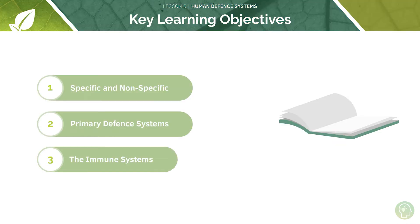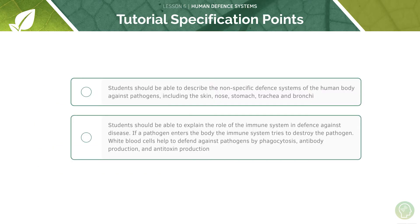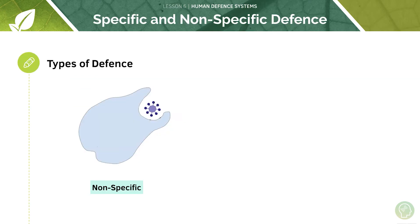So these are our key learning objectives today. We're going to start off by looking at specific and non-specific defence systems as a whole. Our body protects us against pathogens that enter the body and this protection can be either specific or non-specific. In a non-specific defence system the same defence mechanism can be used to fight against any type of pathogen, regardless of the specific type of pathogen or the disease it causes.